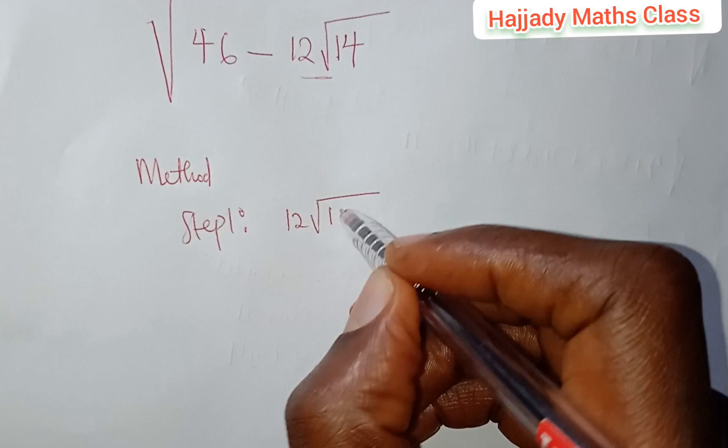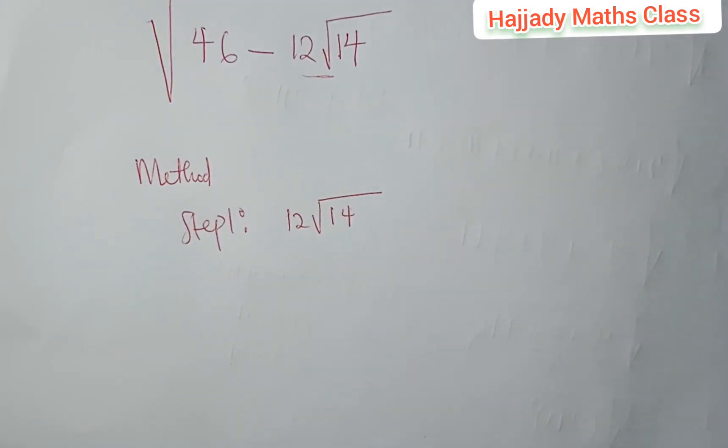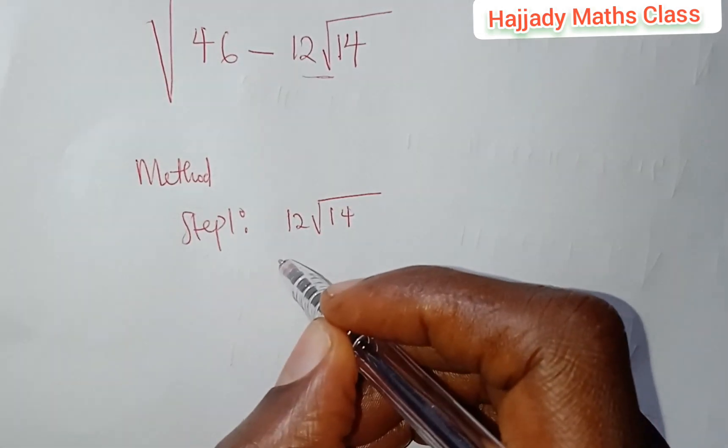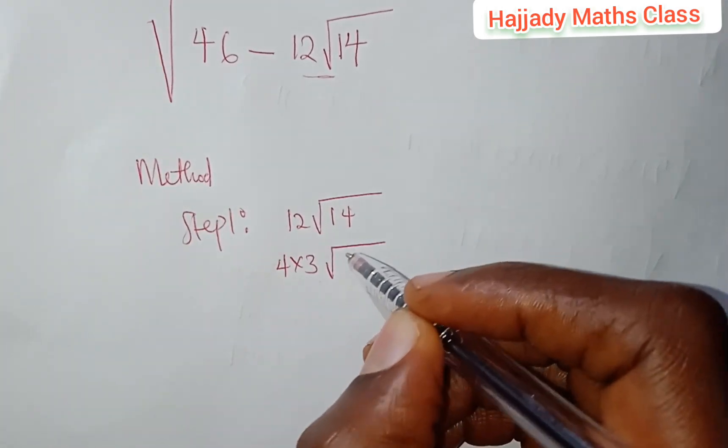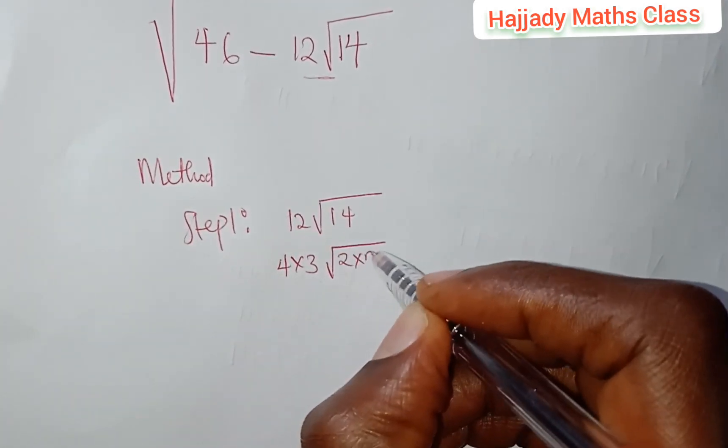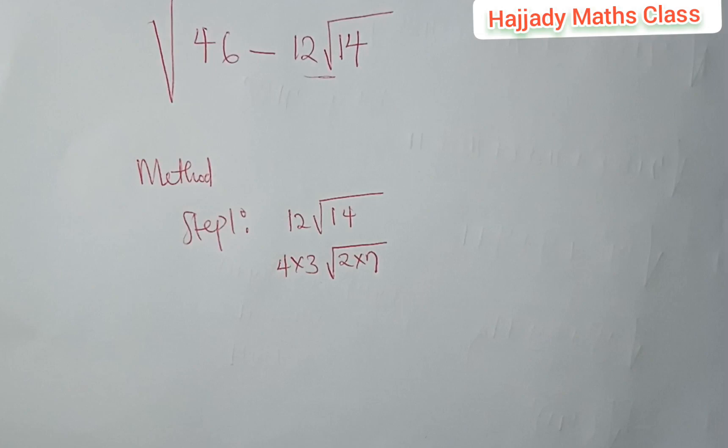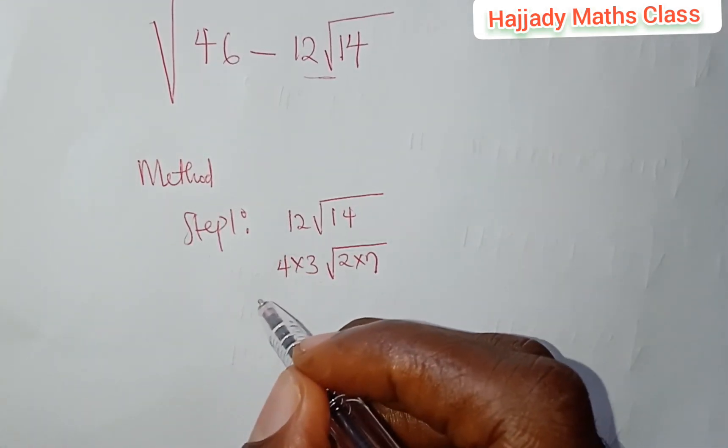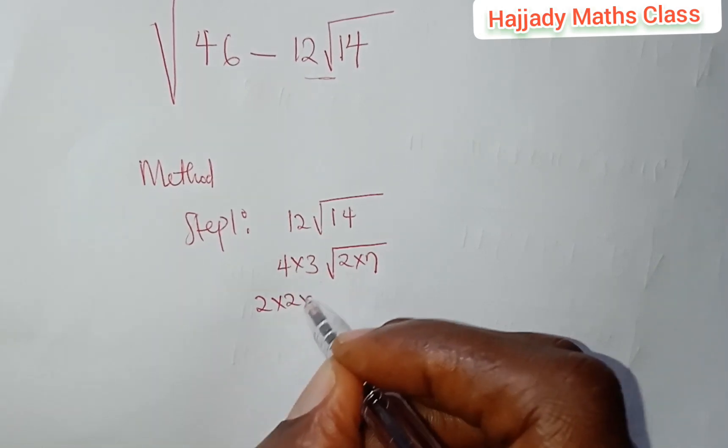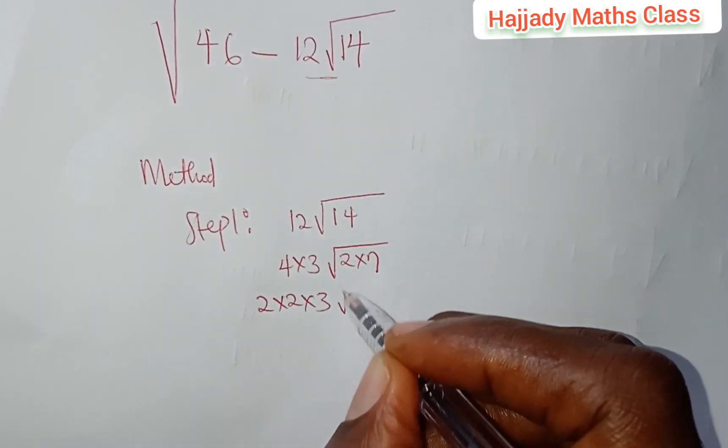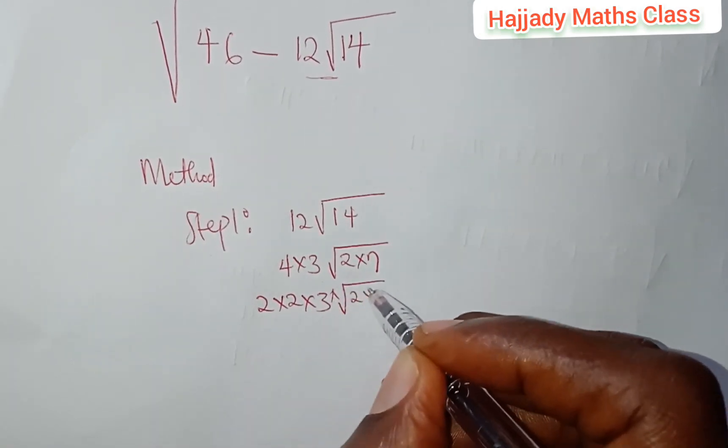12√14. This is what we have. Now, in solving 12√14, 12 can be written as 4 × 3√(2 × 7). This has been split and our 4 is the same as saying 2 × 2 × 3 times 2 × 7.